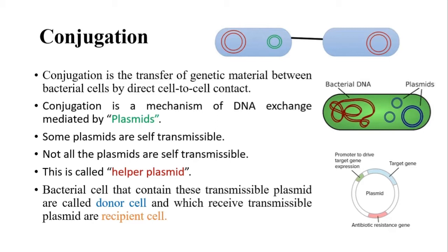Plasmids are the extra-chromosomal, circular, double-stranded DNA molecules present in the bacterial cell. Each plasmid contains several non-essential genes, and these genes provide several benefits and advantages to the bacterial cell, such as providing resistance to antibiotics, causing pathogenicity, and so on.